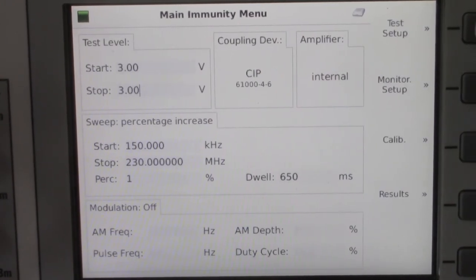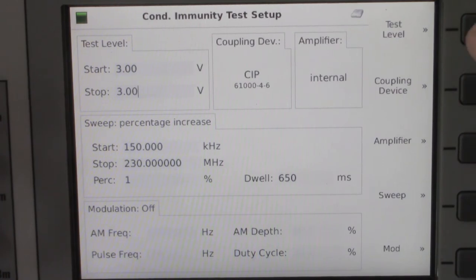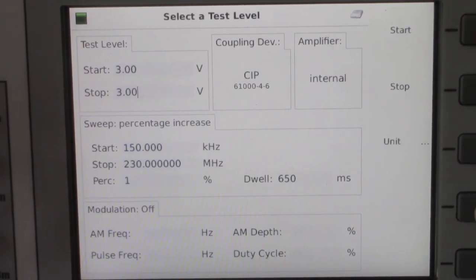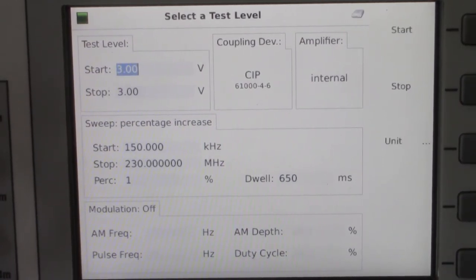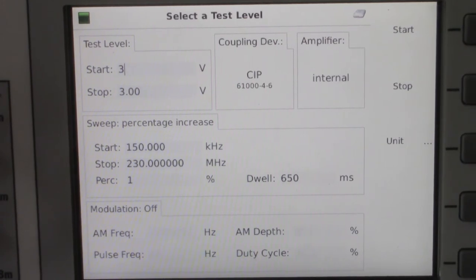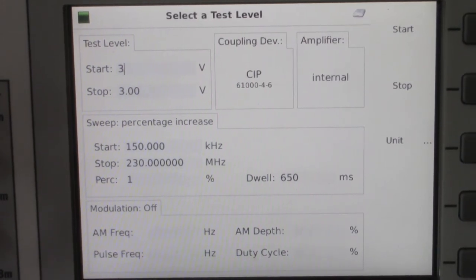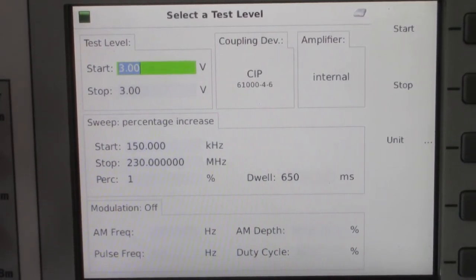We'll start with the test setup. Test levels, that's in the upper right corner. We're looking to start at 3 volts, which is test level 2. As soon as you input it on the keypad, you will see it light up green, acknowledging the input.